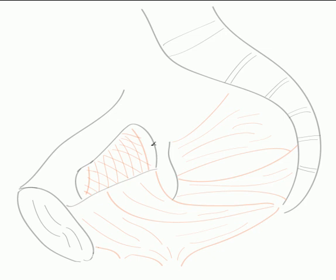Here we're looking into a right hemipelvis, looking at its medial surface. Posteriorly we have the fifth lumbar vertebrae articulating with the sacrum. Here's S1 through to S5 and here's the coccyx, so here's going to be the sacral promontory. Anteriorly we have the pubic symphysis and the superior pubic ramus.